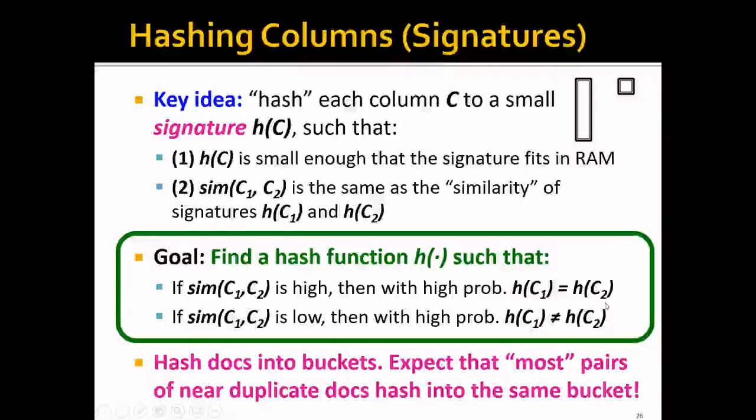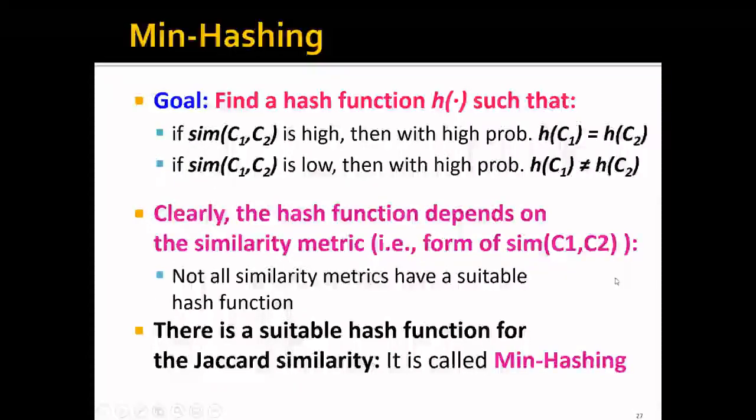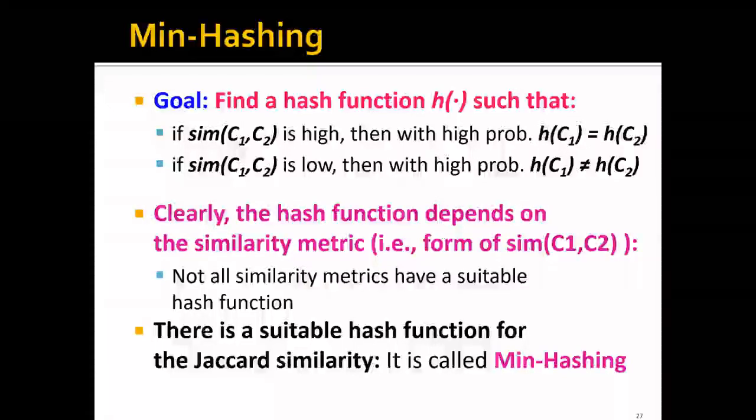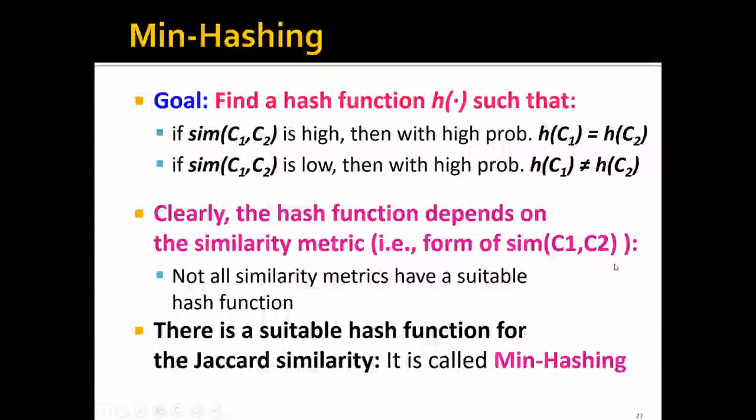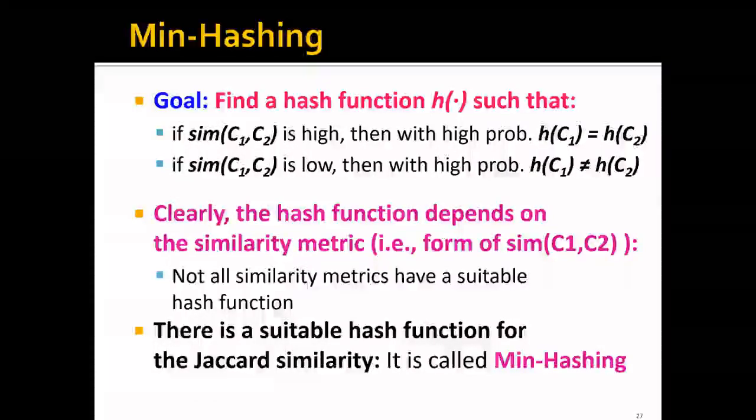So basically, we are trying to hash the documents into buckets and expect that most pairs of near duplicate documents will be hashed into the same bucket. If their signatures are the same, then that basically means that they are in the same bucket. So clearly, this hash function that we are trying to define, it all depends on the similarity metric, right? Basically, it depends on the form of the similarity function that we define here. But not all similarity metrics have a suitable hash function. But luckily for us, there is actually a suitable hash function for Jaccard similarity, and it is called minhashing.